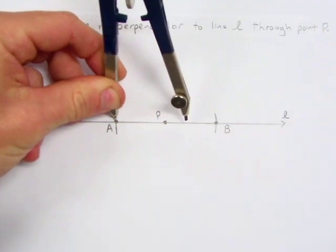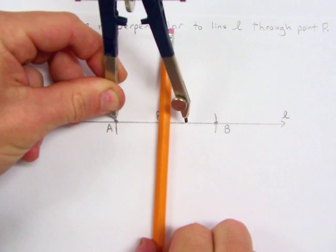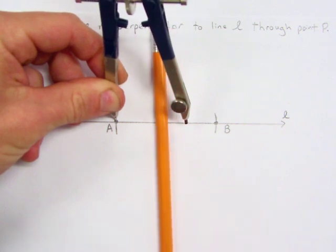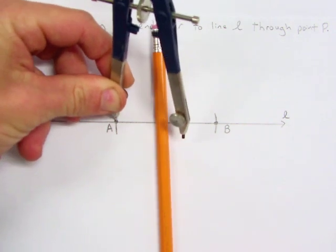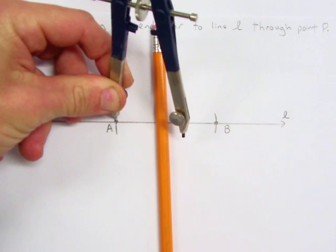That will be good enough. We want to kind of imagine where this perpendicular line is going to be and when we draw our arc we want to make sure we would intersect this line.